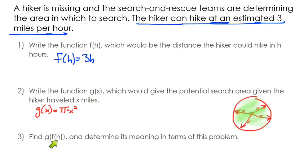So now it's saying find g of f of h and determine its meaning in terms of this problem. What we're going to do is take our g of x function, and then we're going to substitute our f function into it. So we have our g of x function, which is pi times x squared. But anywhere we see the x, we're going to do our function composition and substitute in 3h. And so, if you want to simplify a little bit, we could do pi times 9h squared, which is what this would become when you square the 3 and square the h. So our composite function is this.